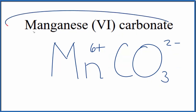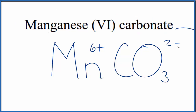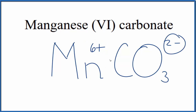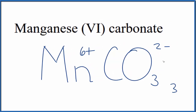Because manganese(VI) carbonate is neutral — it doesn't say 'ion' after it — these charges need to add up to zero; we need a net charge of zero. If we have three carbonate ions, 3 times 2− gives us 6−, which balances out the 6+, giving us a net charge of zero.